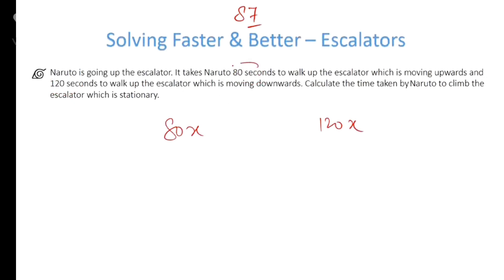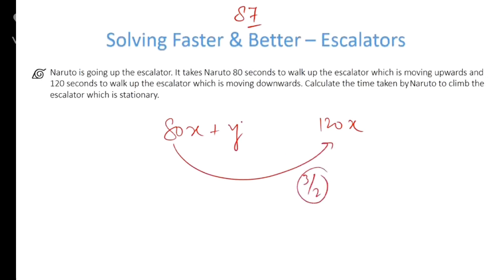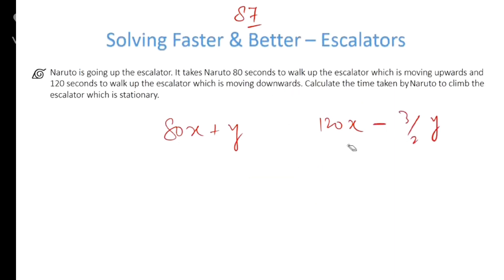Let's say the escalator takes y number of steps. In the first case, in the second case, because this is 1.5 times, the escalator will also move 3/2 y. The other case is negative because the escalator is moving upward and in the second case he is moving downwards, so we subtract the number of steps.